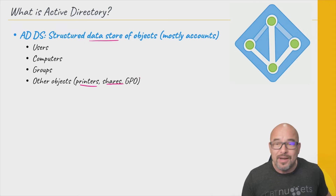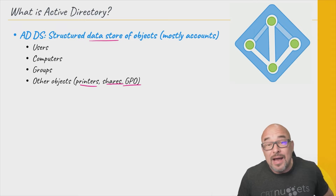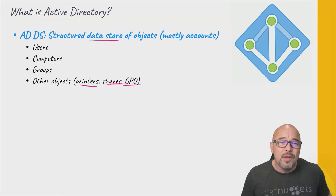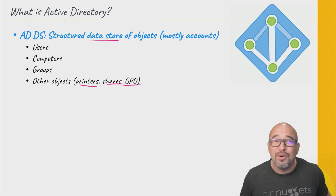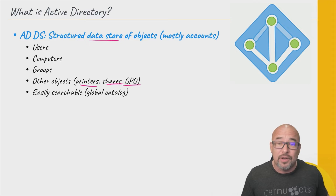We have something called Group Policy Objects, or GPOs. This is actually a combination of both a file location as well as Active Directory. Group policy objects exist there as well. Group policies really centrally control most everything that the user can see or do on their computers, as well as many other things related to Windows. They're very, very powerful — there are thousands of different separate settings that can be configured in a group policy. I'll be talking about that in much more detail later on in this course.